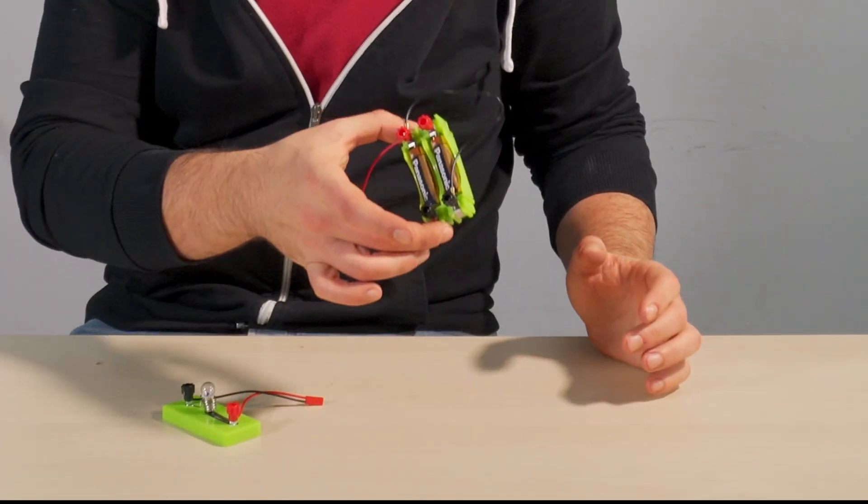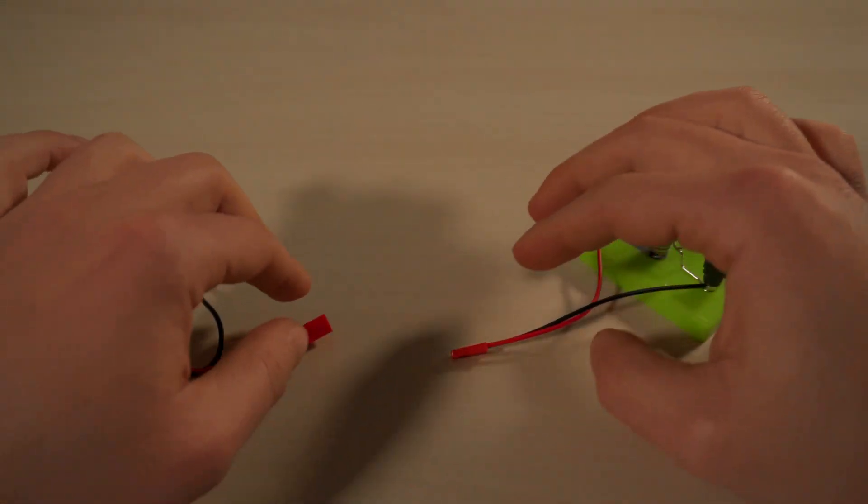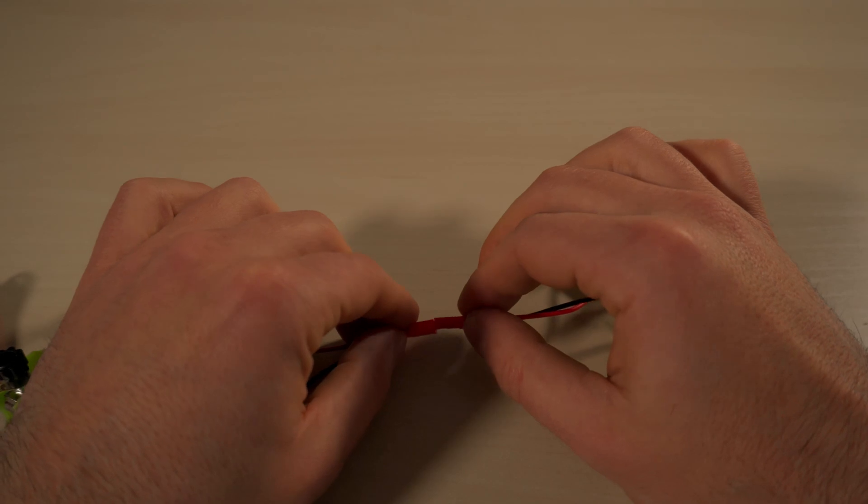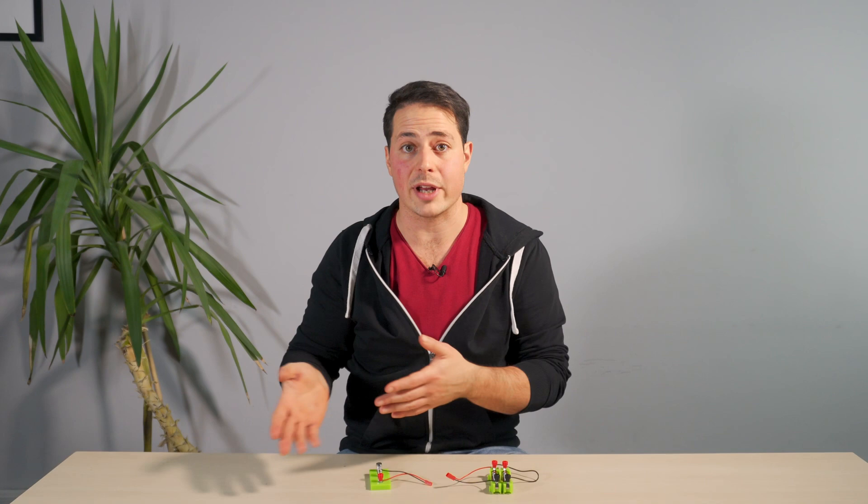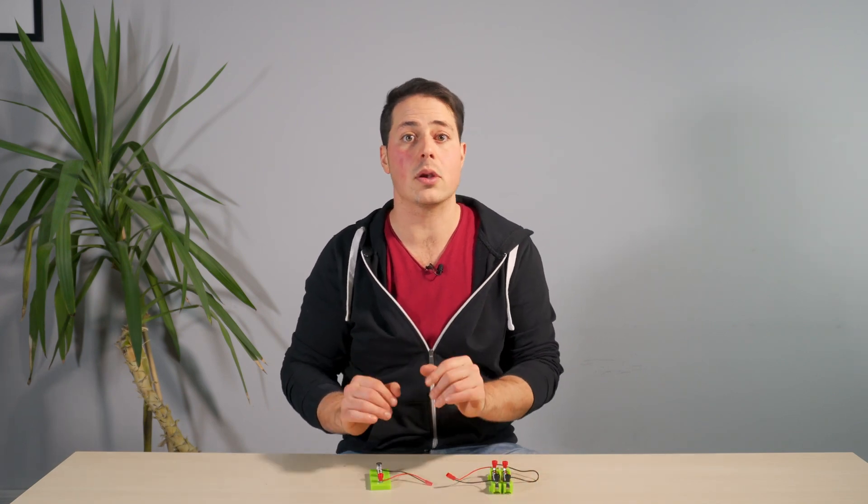For now, we have a battery that creates a voltage difference. And that voltage difference, in turn, creates a current that turns on the light. So we know that voltage creates current. But let's look a bit closer at that relationship.